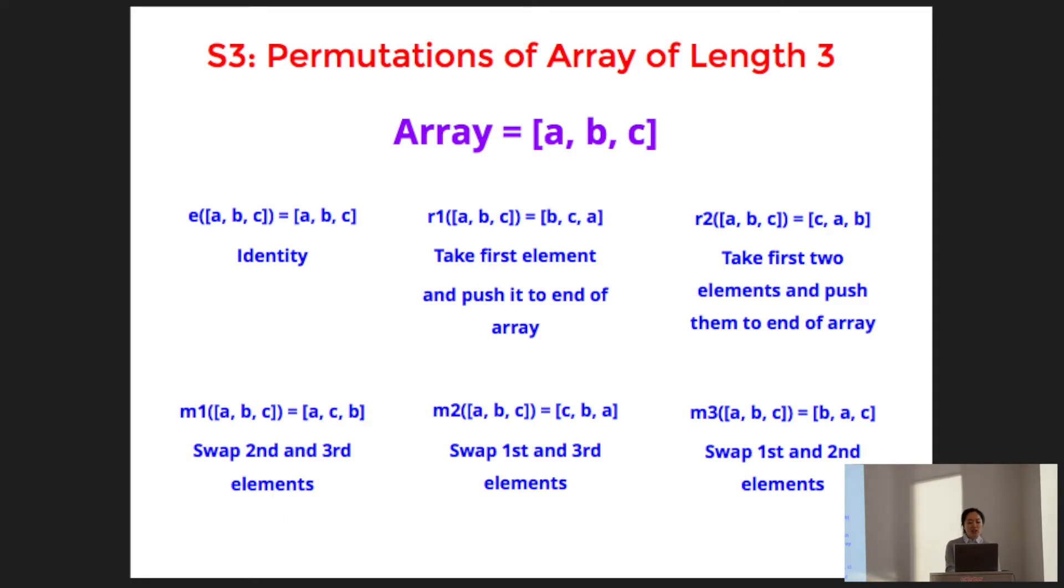And if you look at m1, m2, and m3, each of these permutations is its own inverse. Because if you swap two elements and then you swap the elements that are in those same positions again, you just get back your original array. And associativity can also be verified if you manually check each element of the array.